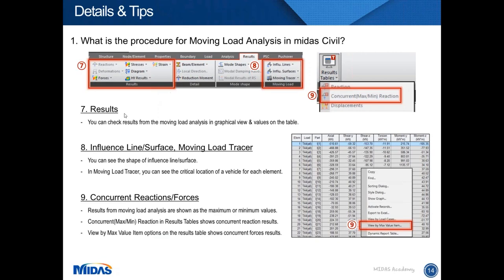After the moving load analysis, we can check the results in the results table and also in the graphical view. We can check the influence line and surface diagrams, and also the critical location of the vehicle using the influence line and surface. Sometimes we need to check concurrent reactions and forces — also called corresponding reactions and forces — and Midas Civil provides these results in table format.